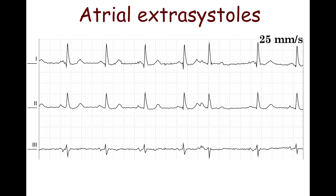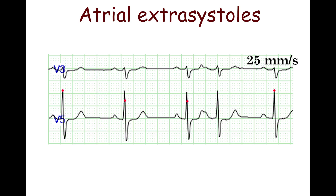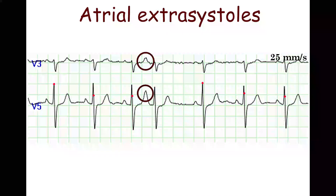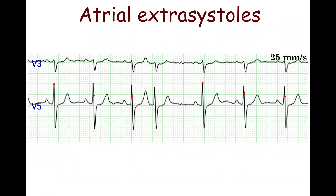Sometimes the P-wave of an atrial extrasystole may merge with the previous T-wave and may be poorly seen. Nevertheless, the P-wave in atrial extrasystole may appear at the apex of the T-wave. Variations in the T-wave amplitude and morphology before the premature QRS complex suggest superimposition of the P-wave on the T-wave.